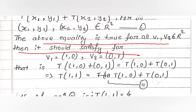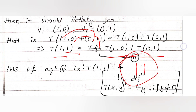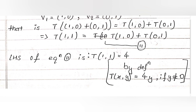For Equation 1 to hold for all v1, v2 in R², it must hold for v1 = (1, 0) and v2 = (0, 1). So we need T((1,0) + (0,1)) = T(1,0) + T(0,1), which gives T(1, 1) = T(1, 0) + T(0, 1). Call this Equation 2.